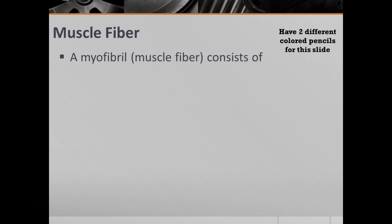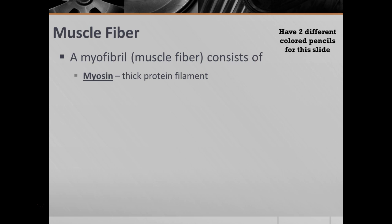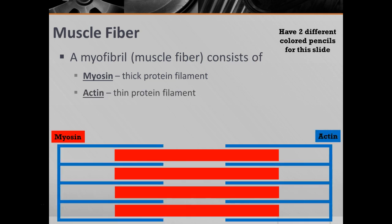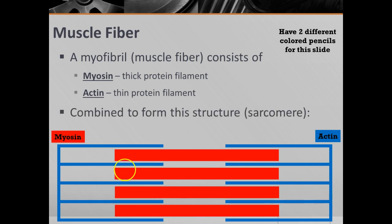An individual muscle fiber consists of a couple different parts. We have one called myosin, which is a thick protein filament represented by these red, thick filaments. Then we have a thinner one called actin on the outside — so myosin is the red, and actin is the blue. They combine to form a structure called a sarcomere.